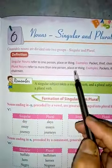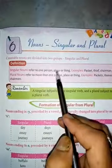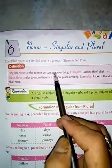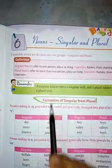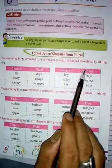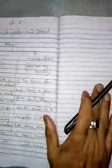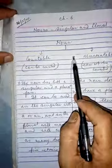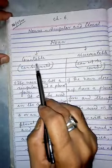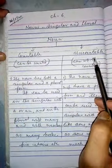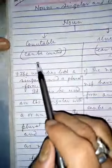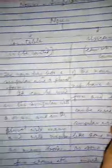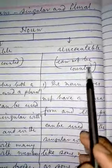Before starting this chapter, I want to discuss about Singular Number and Plural Number. First of all, children, nouns are also divided into two: one is countable nouns and another is uncountable nouns. Countable nouns means can be counted. Uncountable nouns means cannot be counted.